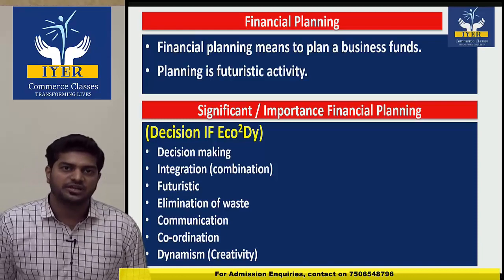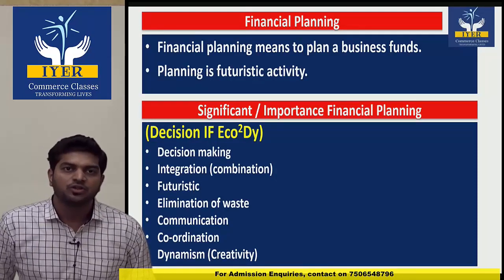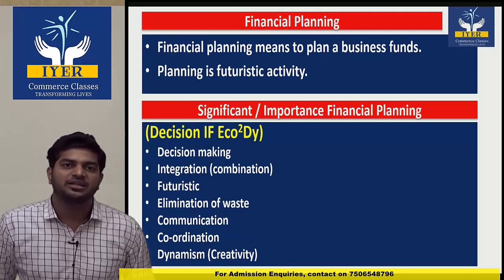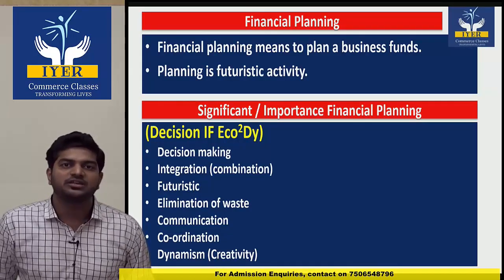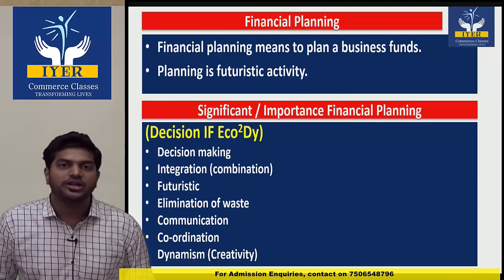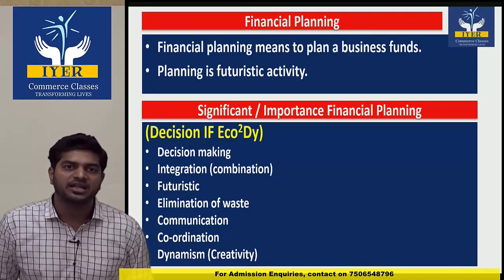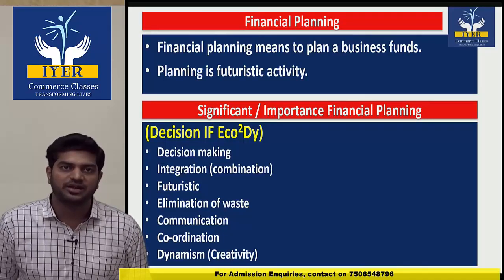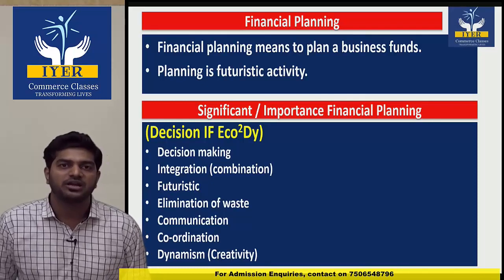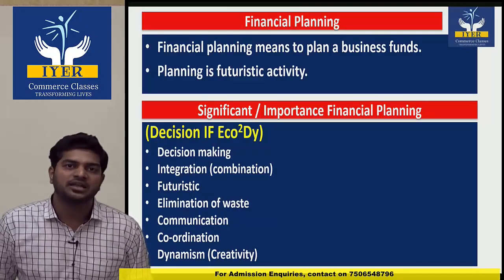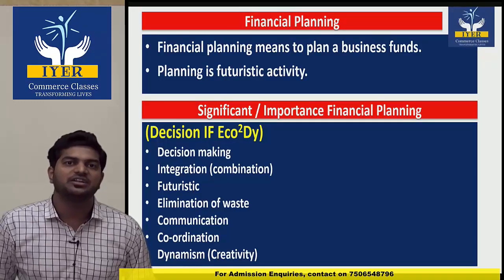Fifth, communication — top level management communicates the plan to middle and lower level management. Like a cricket team captain tells all teammates the match plan. Communication is an essential part of planning. Sixth, coordination — for planning to be successful, we need coordination of middle and lower level management. Seventh, dynamism — creativity. Same planning is never always successful; planning must always be creative and new.